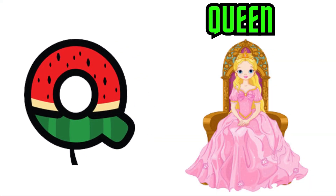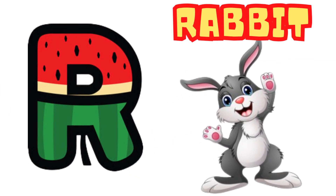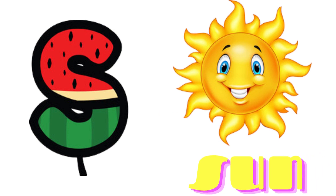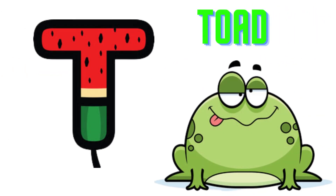Q is for Queen, Q-Q-Queen. R is for Rabbit, R-R-Rabbit. S is for Sun, S-S-Sun. T is for Toad, T-T-Toad.